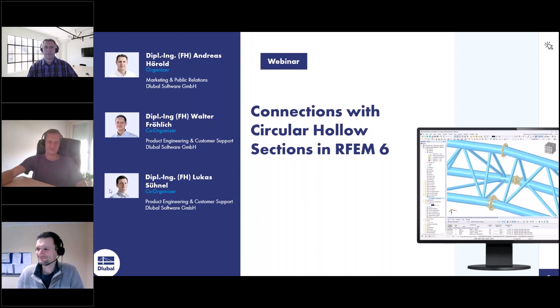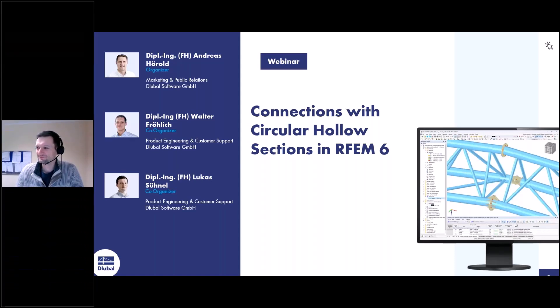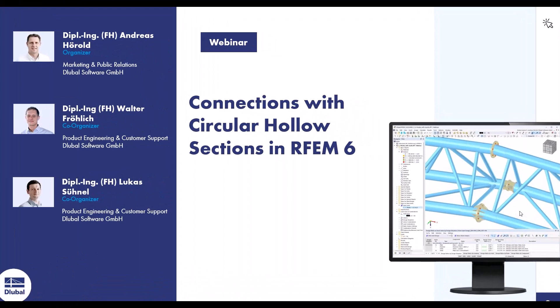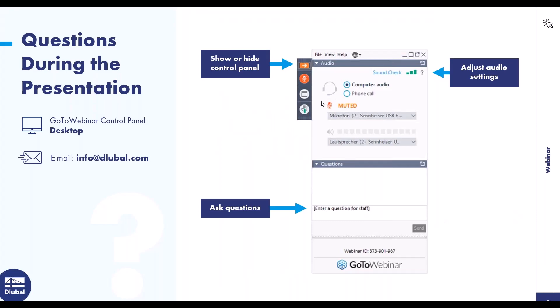We can switch off our webcams so that the attendees can see the full screen. On the right side of your screen, you can see the control panel. You can show that with the arrow here, then enter a question, and my two colleagues will answer you. If you don't get an answer during the webinar, you will get an email afterwards. The other way is to email your questions to info at global.com.